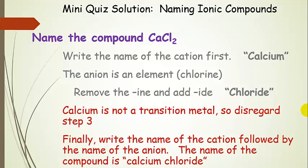Notice that this name does not say anything about how many of each element are in the formula. There's one calcium and two chloride anions, but we don't need to specify that because we know the charges completely balance.